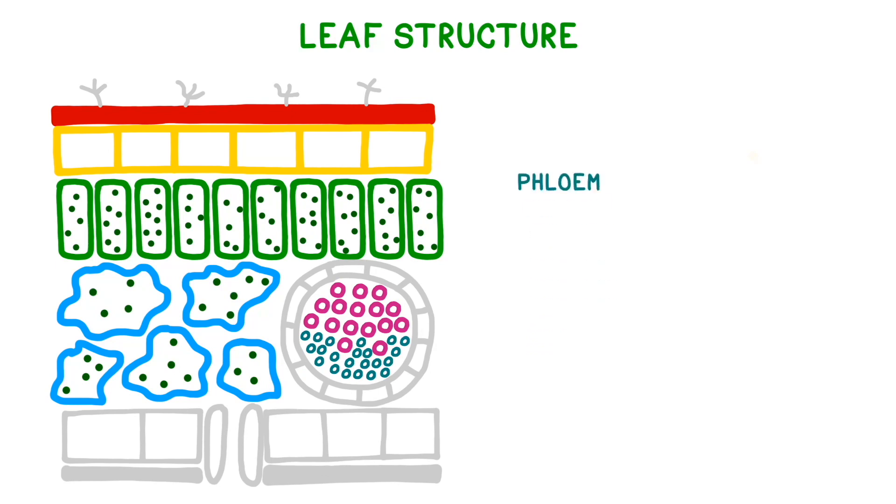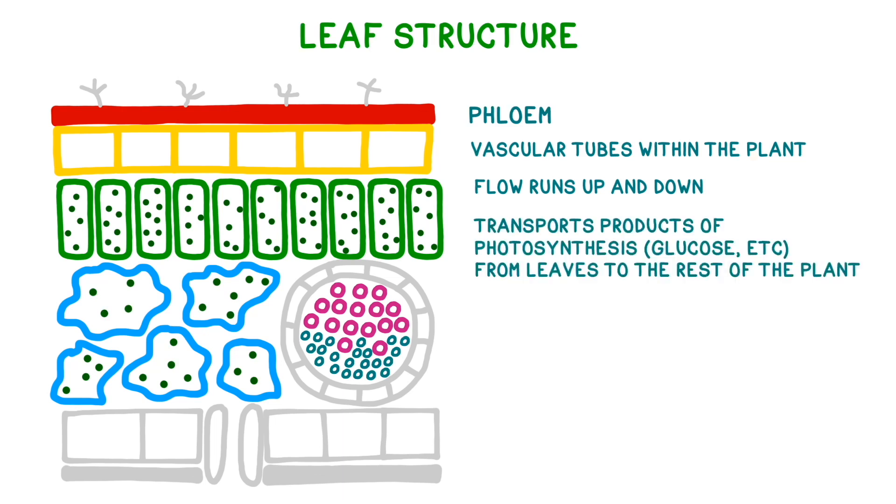Phloem is xylem's counterpart. These are also vascular tubules within the plant, but its flow runs both up and down. It's used to transport the products of photosynthesis from the leaves to the rest of the plant.